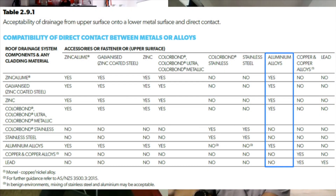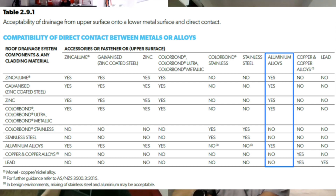The last option is to look at the roofing manufacturer's installation guide. They normally specify what materials can be in contact with their roof cladding — this covers accessories, water drainage, gutters, flashing, and it's safe to include clamps as well.